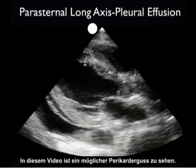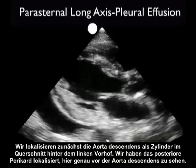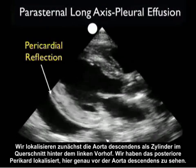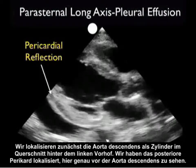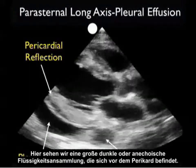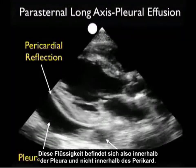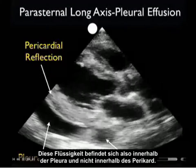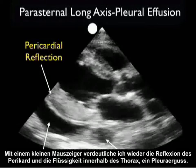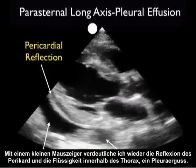Here's a video clip showing a potential mimic of a pericardial effusion. Let's begin by identifying the descending aorta as a cylinder cut in cross-section posterior to the left atrium, and we identify the posterior pericardium coming off just anterior to the descending aorta. Note the presence of a large dark or anechoic fluid collection, but note that it lays out posteriorly to the pericardium. Thus, this fluid is within the pleural cavity and not the pericardial cavity. With a small indicator arrow, I'm reinforcing the pericardial reflection and the presence of the fluid within the thoracic cavity — a pleural effusion.